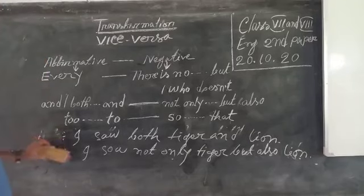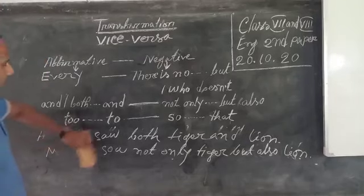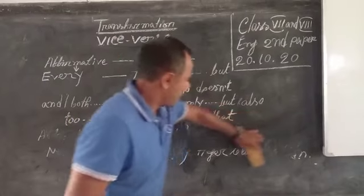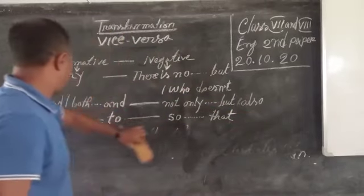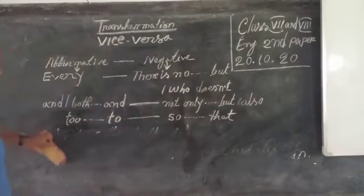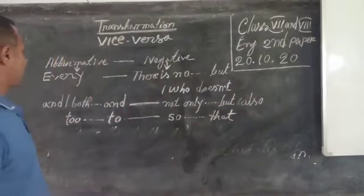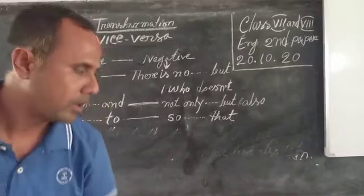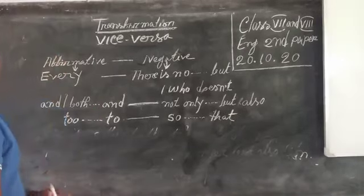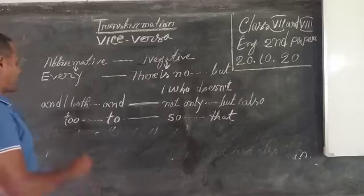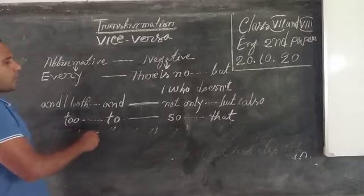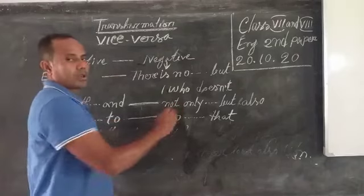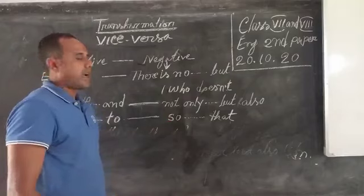Dear students, here is another vice versa of affirmative to negative. When the affirmative consists of 'too...to', we make the negative using 'so...that'.